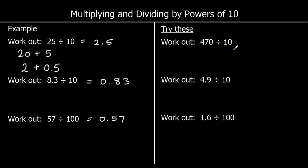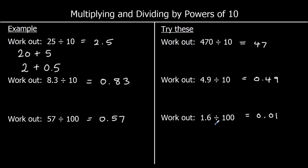470 divided by 10: 400 becomes 40 and 70 becomes 7, giving 47. 4.9 divided by 10: the 4 becomes 0.4 and the 0.9 becomes 0.09, giving 0.49. 1.6 divided by 100 — dividing by 10 twice: the 1 becomes 0.1 then 0.01, and the 0.6 becomes 0.06 then 0.006, so the answer is 0.016.